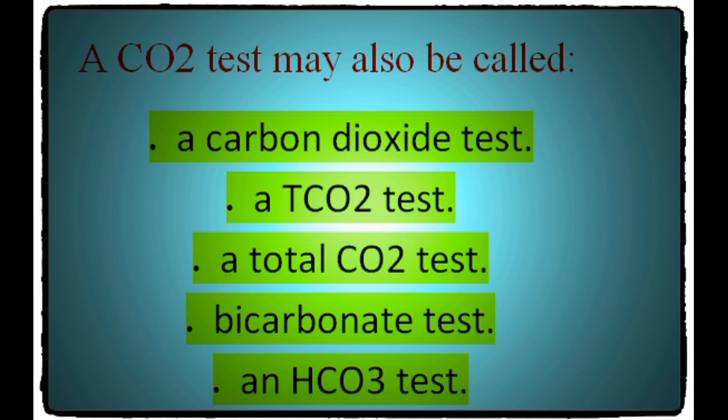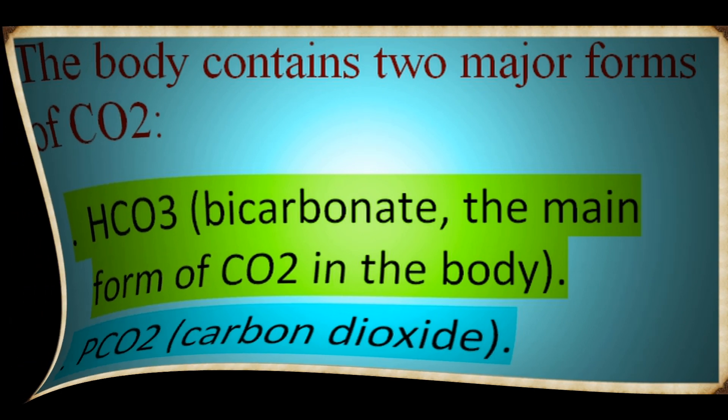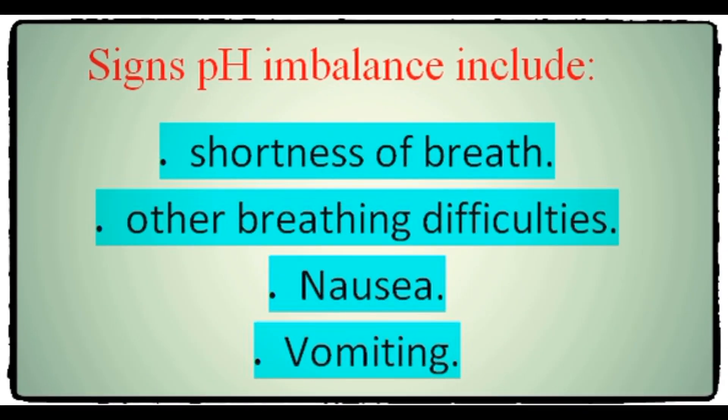The body contains two major forms of CO2: HCO3 (bicarbonate), the main form of CO2 in the body, and pCO2 (carbon dioxide). Your doctor can use this test to determine if there's an imbalance between the oxygen and carbon dioxide in your blood, or a pH imbalance. These imbalances can be signs of a kidney, respiratory, or metabolic disorder.